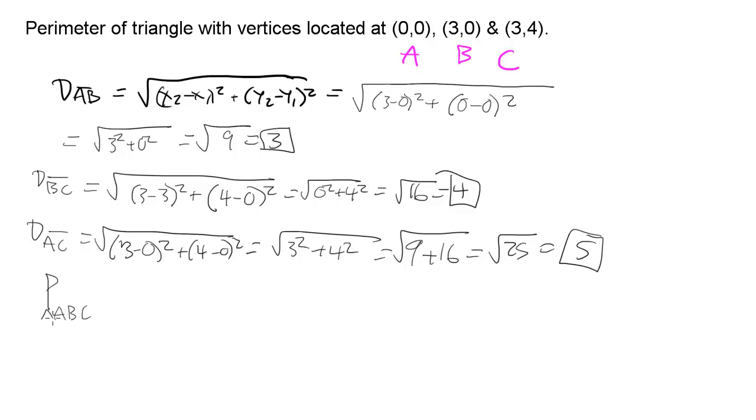So the perimeter of triangle A, B, C is going to be 3 plus 4 plus 5, which is going to be 7 plus 5, which is 12.